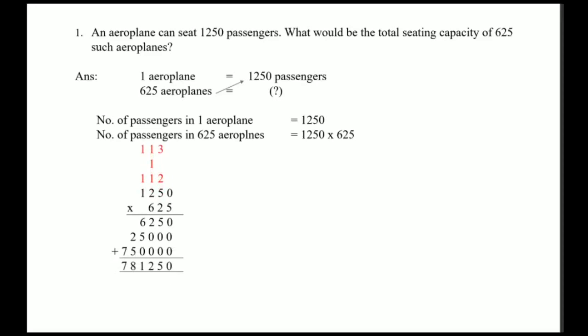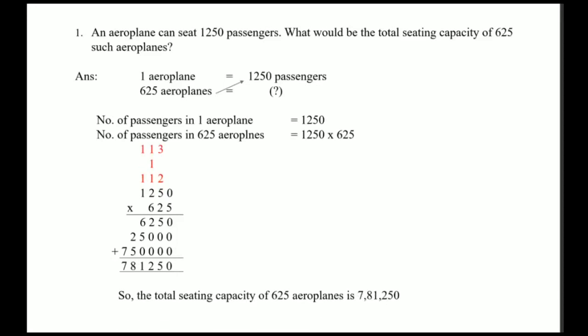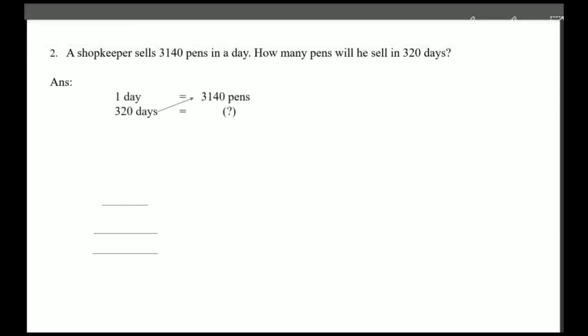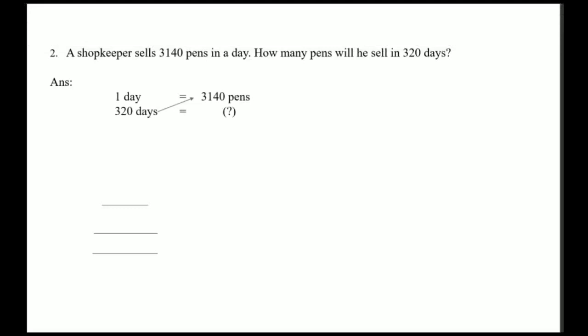Our final answer is 7 lakh 81,250. So the total sitting capacity of 625 aeroplanes is 7 lakh 81,250. Sum number two: a shopkeeper sells 3140 pens in a day. How many pens will he sell in 320 days? Here also, the number of pens sold in one day is given; you have to find the number sold in 320 days, so you will do multiplication.